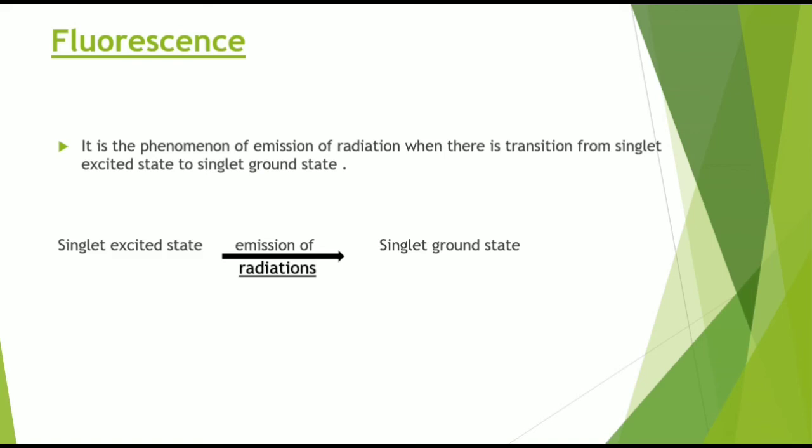Now let's have a look at the key terms included in the Jablonski diagram. The first one is fluorescence. It is a phenomenon of emission of radiation where there is a transition from the singlet excited state to the singlet ground state — that is, when the transition occurs from the singlet excited state to the singlet ground state, there is emission of radiation.